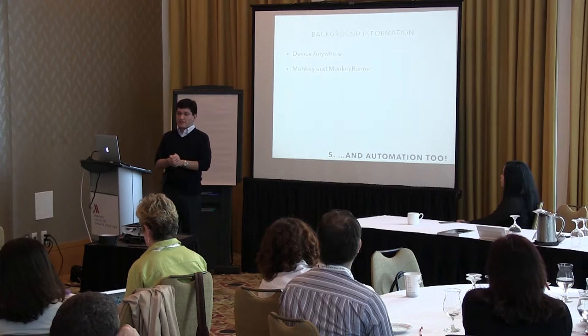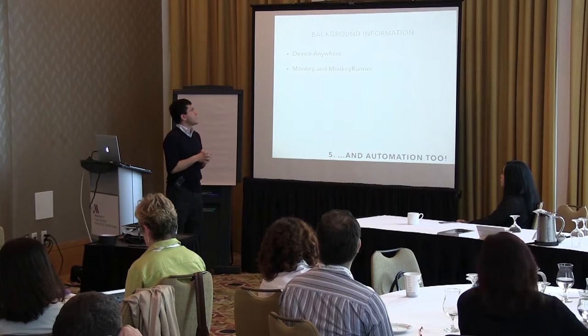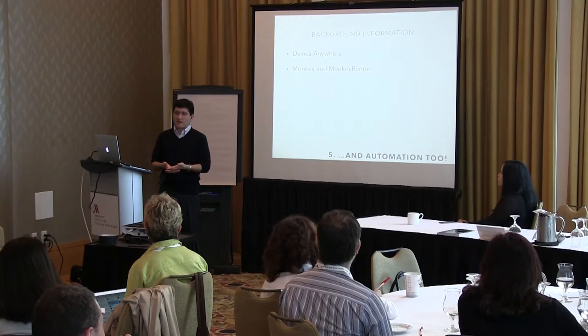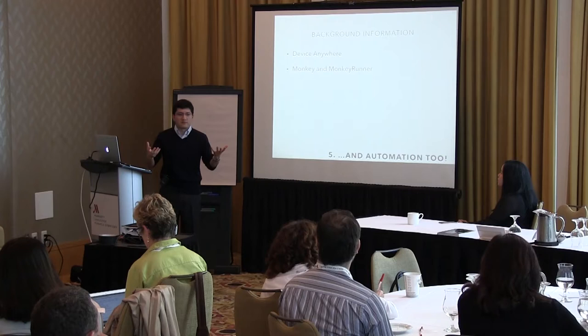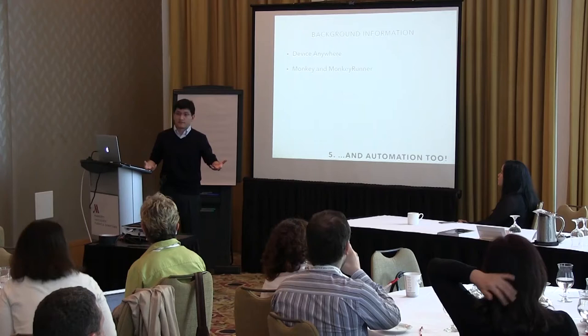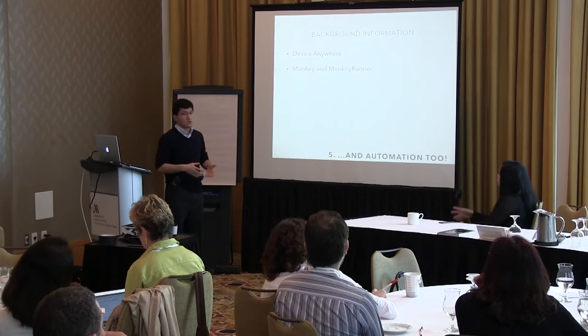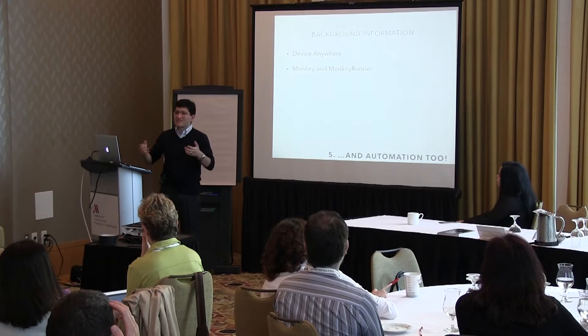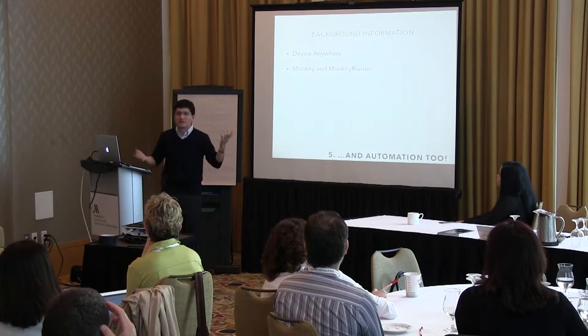I started looking into mobile automation around 2009 to 2010 — pretty early. Back then there was Device Anywhere, one of the first companies doing professional mobile automation using image comparison and text recognition. It didn't work very well for me back then, but they're still around. If you like a more user-friendly drag-and-drop type system, that's still an option. Monkey and MonkeyRunner for Android is basically a tool that randomly taps things on an Android device — one of the early iterations of Android automation, still around today.